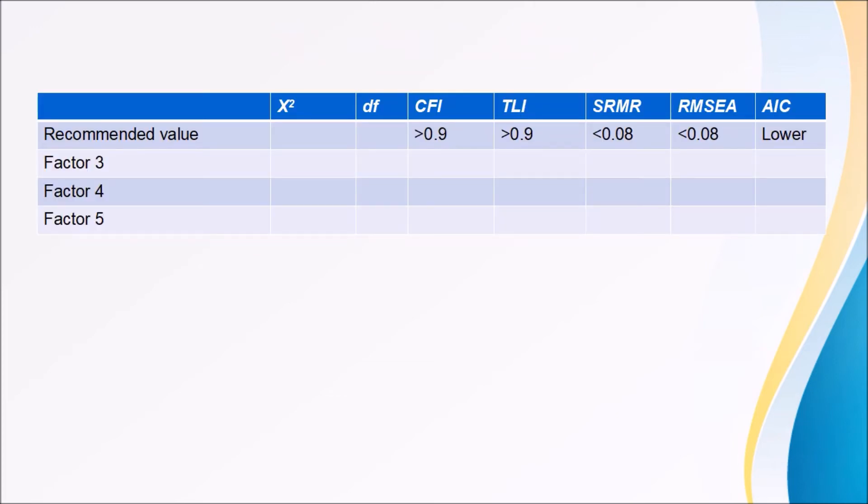So after doing all this exercise, it's strongly recommended that you prepare this kind of table where you put the values—the chi-square, degrees of freedom, CFI, TLI, SRMR, RMSEA, and AIC—for each option.